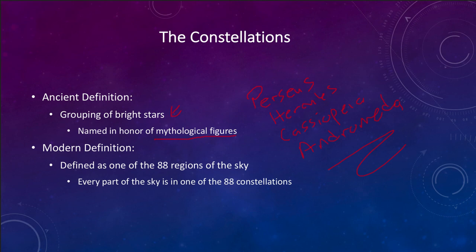Areas with fainter stars or very few visible stars were not part of a constellation. The modern definition, done not quite a hundred years ago, is that there is a very specific boundary to each of the constellations, and the sky is divided into 88 regions. No matter where you look on the sky, every single part is within one of those 88 constellations. So if you point at the sky, you are pointing to one constellation or another.